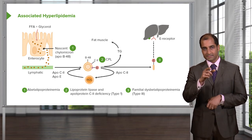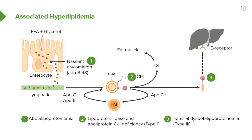Now inside the enterocyte, we're going to recreate the triglyceride — this is called re-esterification. Think of it like Nightcrawler from X-Men: he disintegrates, goes through the wall, and then reappears. The triglyceride went through the wall, first became free fatty acid and monoglycerol, and then reformed into triglyceride. Now you're going to form a nascent chylomicron — nascent meaning baby, new.